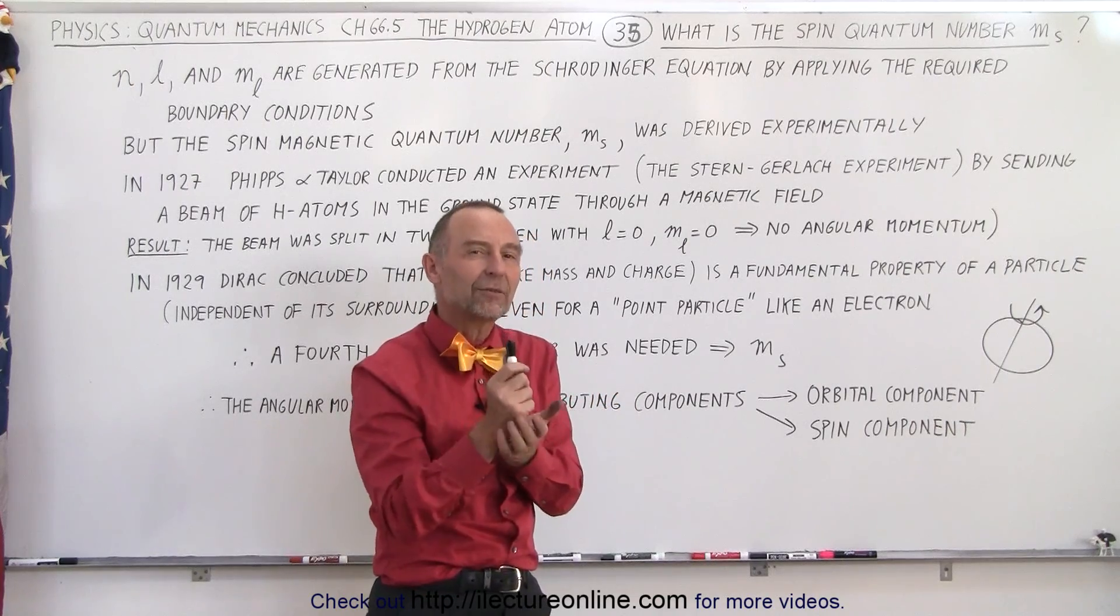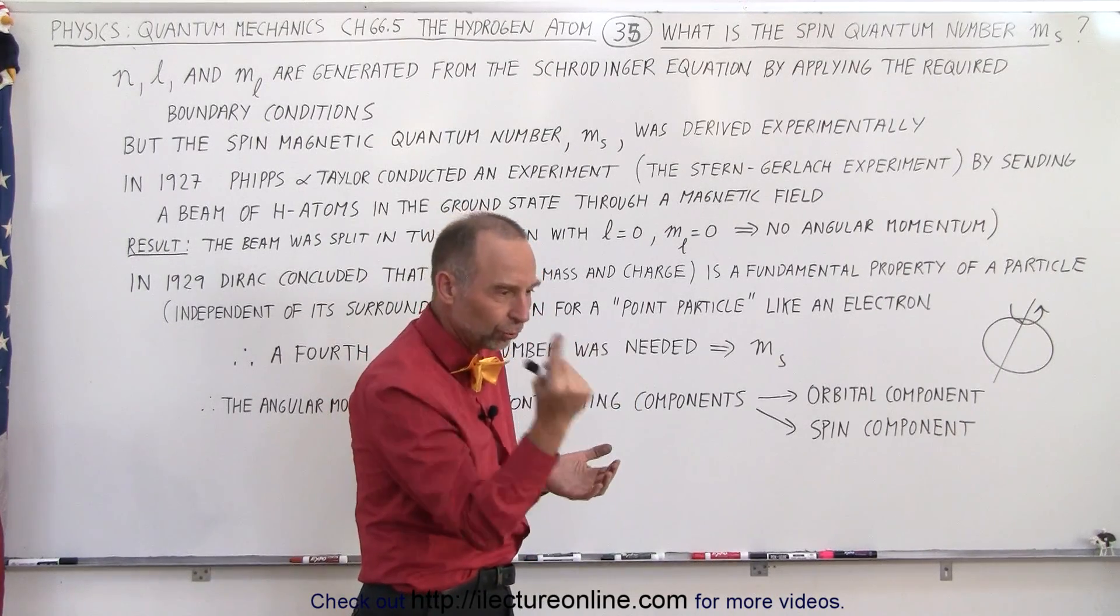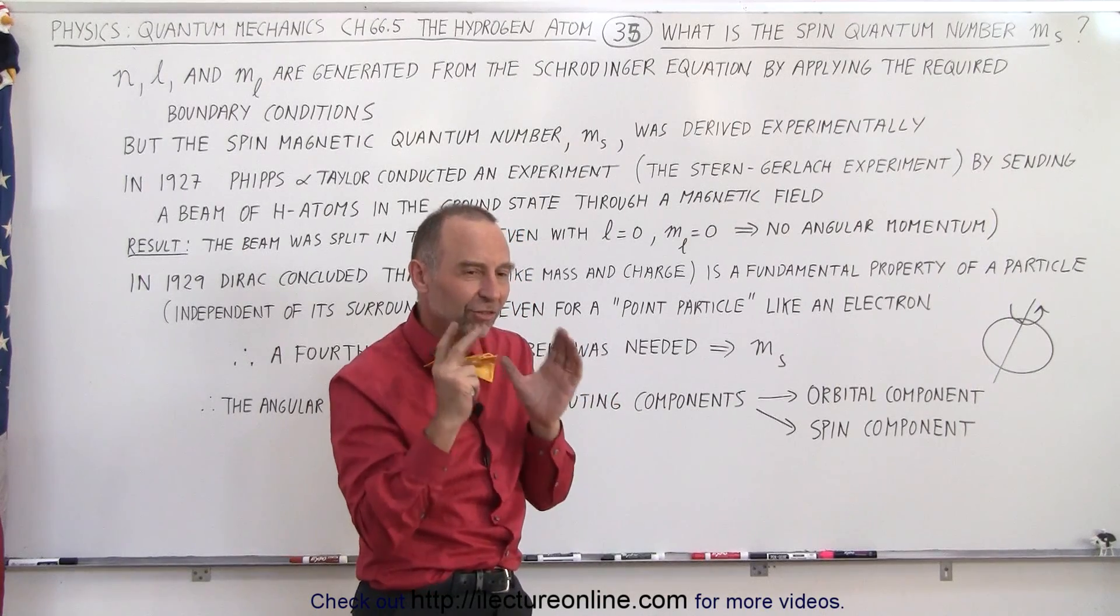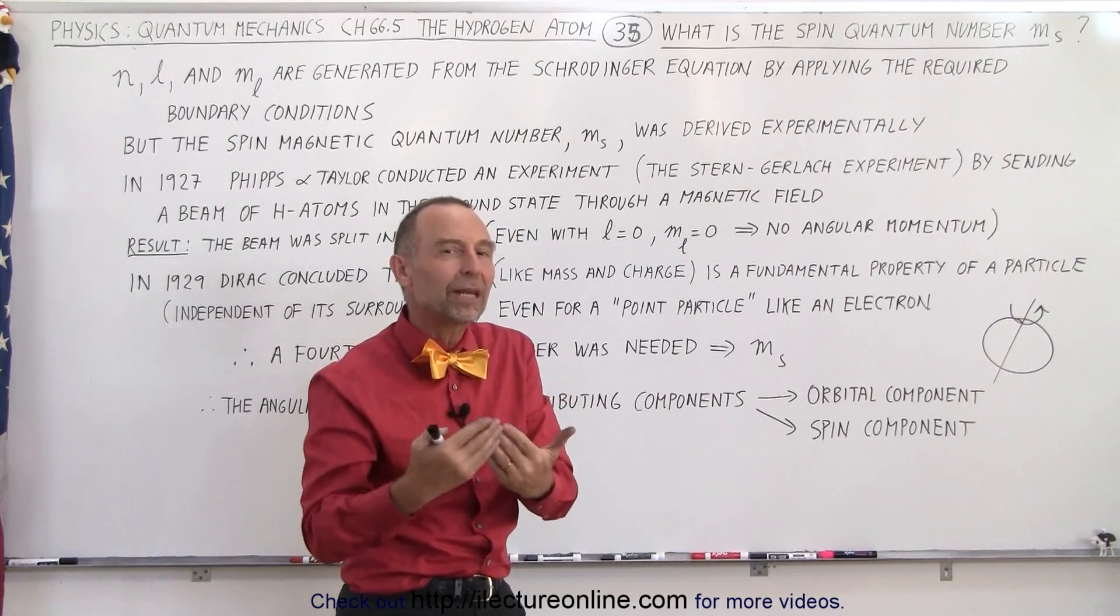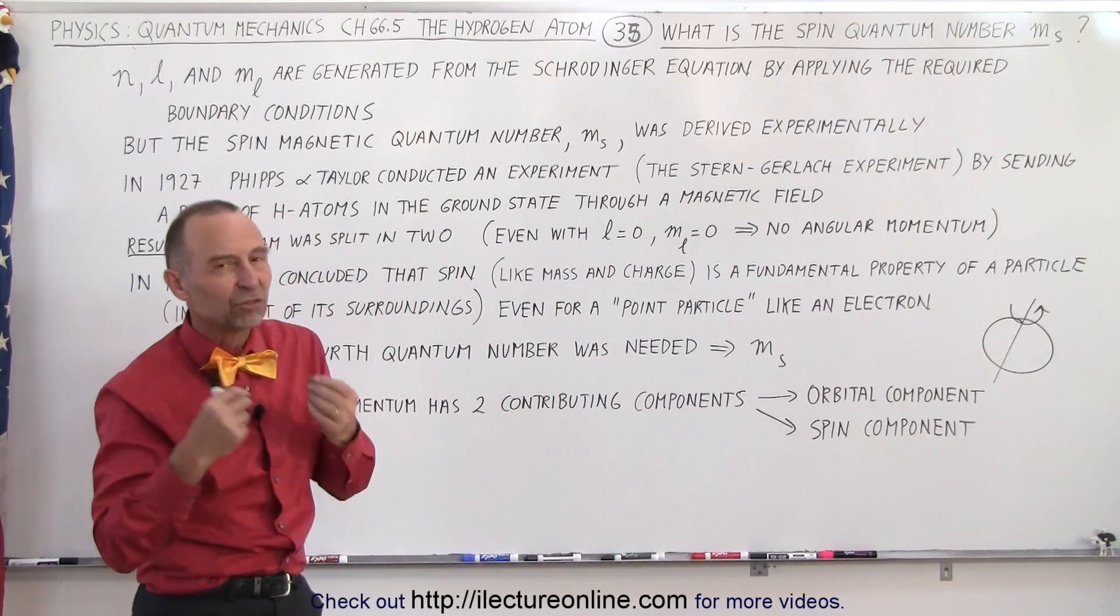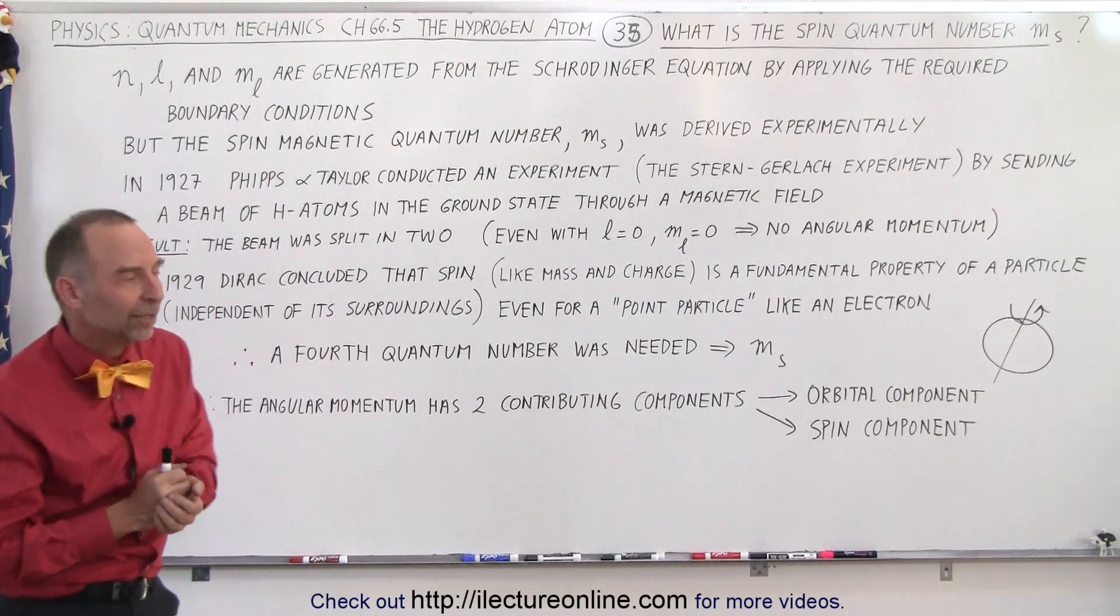but we may not think of it in the classical terms, in terms of the actual electron spinning around. However, there's still something that acts like it is spinning, so that's why we called it the spin quantum number, and we'll explore that more in future videos.